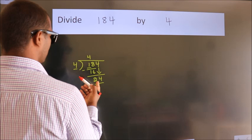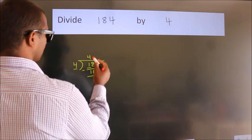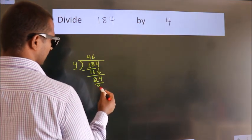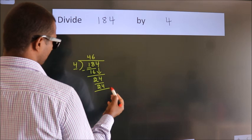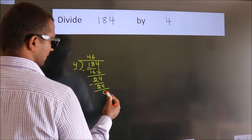When do we get 24? In the 4 table, 4 sixes, 24. Now we subtract. We get 0.